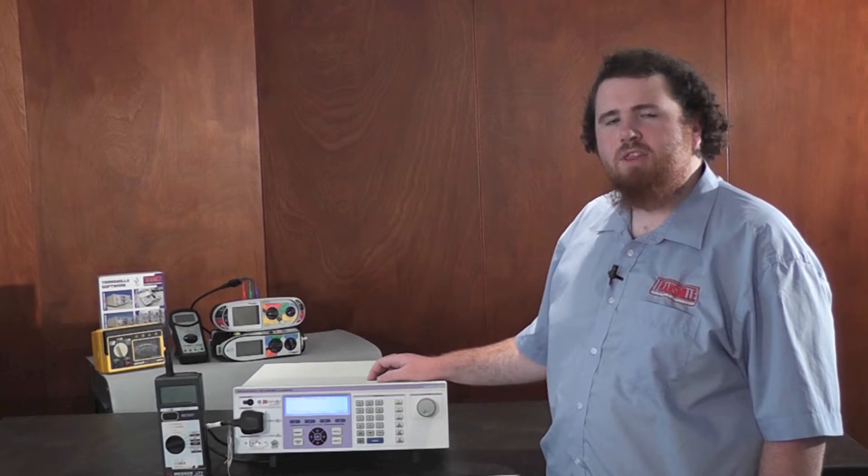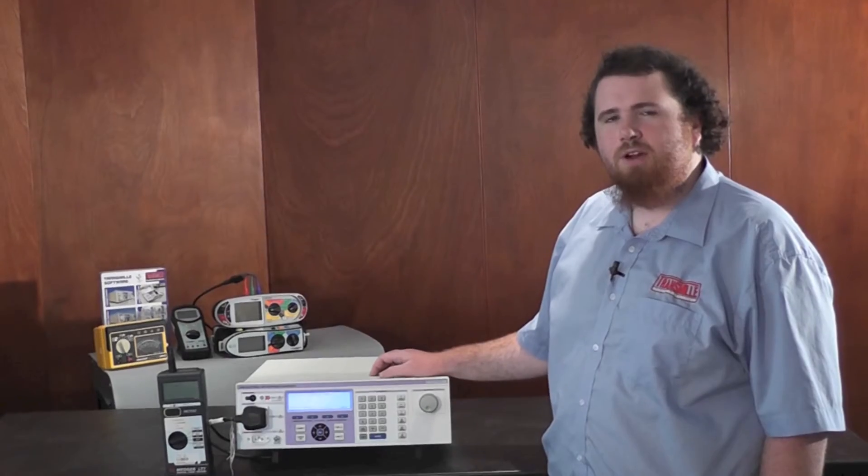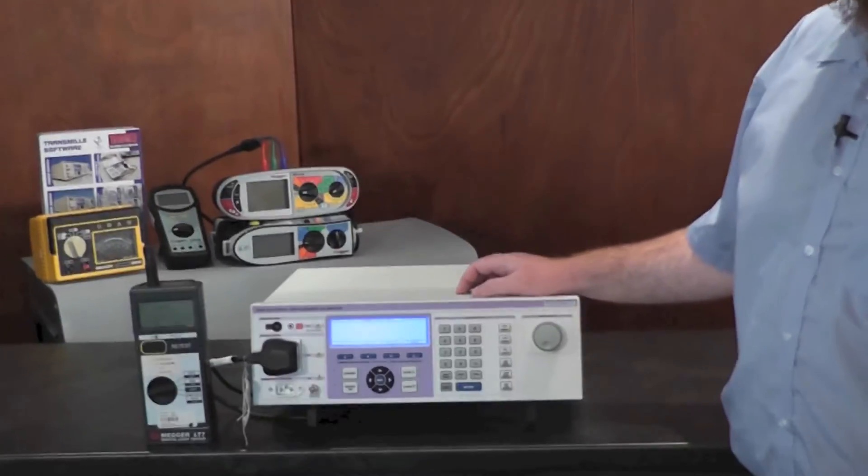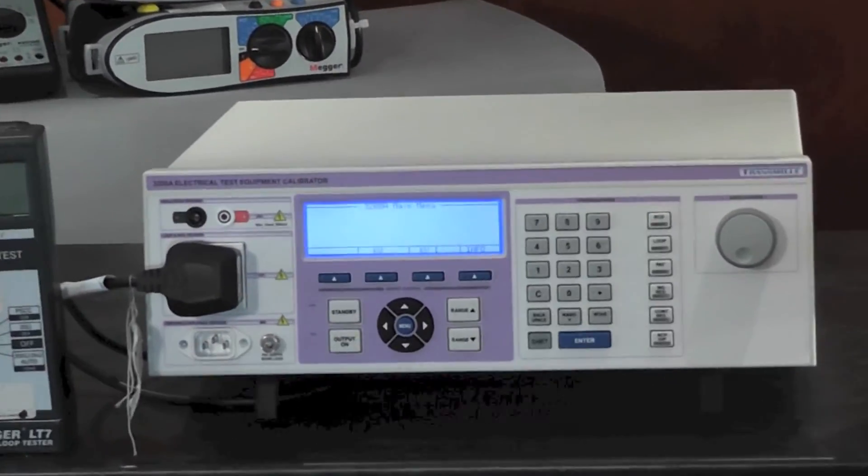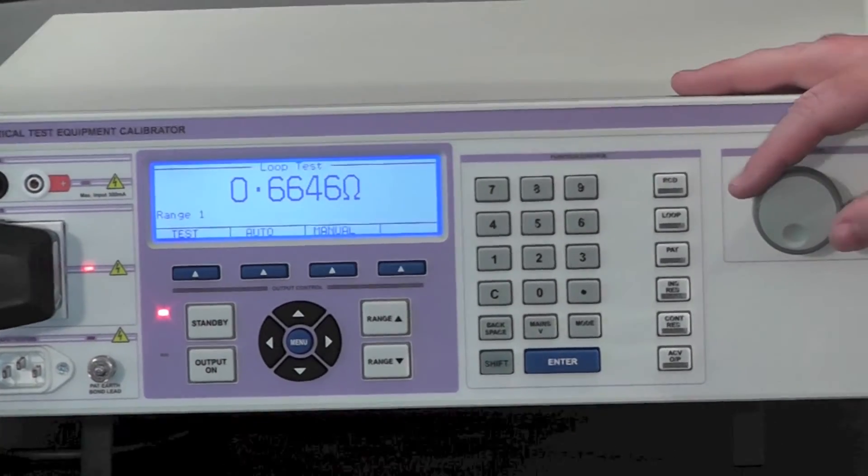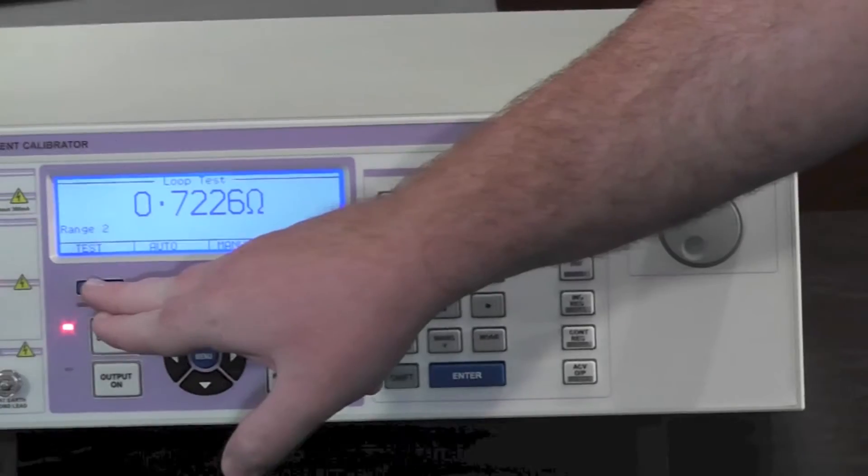Calibrating a loop tester with the 3200A is easy, especially with the auto loop function that automatically adds the loop resistance to the value indicated on the 3200. To test a loop tester, press the loop key, select the range using the digital control and press test.